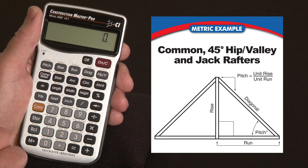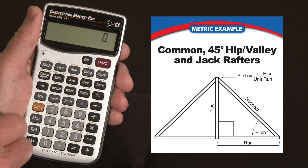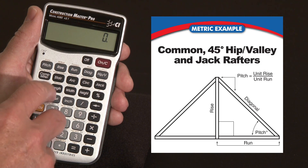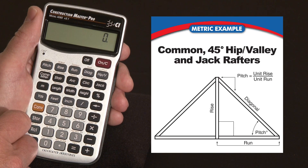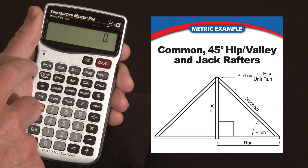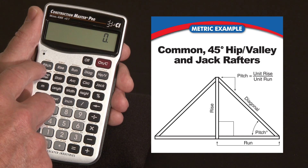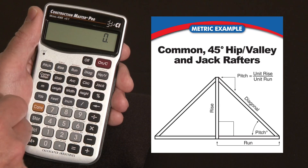Let me show you how the Construction Master Pro's right angle functions can help save time and reduce costly material guesstimates when doing rafters. As long as you know any two of these values, you can solve for the rest. Let's say we want to calculate the length of a common rafter and a regular 45 degree hip or valley rafter and some jack rafters. One of the first things you need to know about the pitch key is that it's rise over run, which we define as half the span of the building.